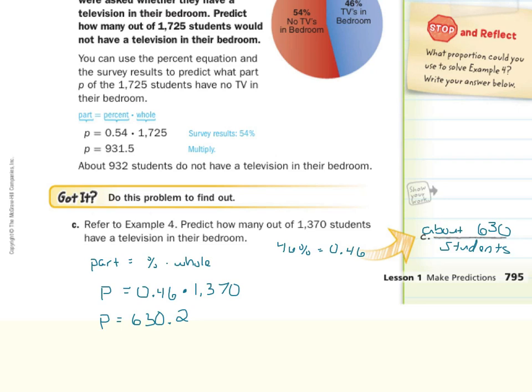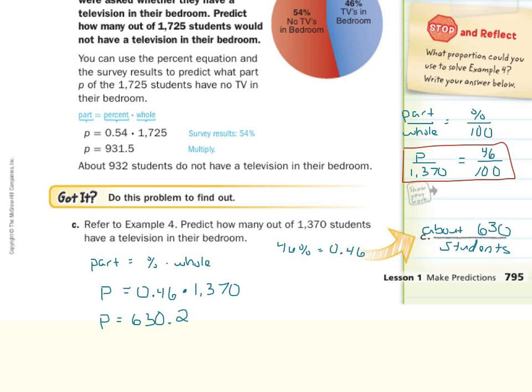Stop and reflect: what proportion could you use to solve example four? One way is to use Part/Whole = Percent/100, setting up p/1,370 = 46/100. Cross multiply and solve, and you still get about 630 students. That is it for this lesson on Make Predictions — using ratios and using equations. Good luck!